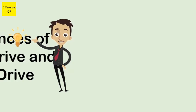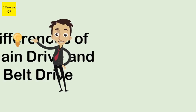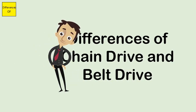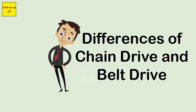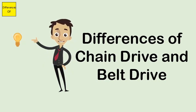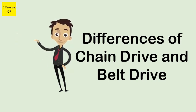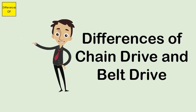Differences between chain drive and belt drive. Chains are made of alloys, while belt drives are made of polymers. Chain drives can operate in high temperature and moist conditions, whereas belt drives cannot operate in high temperature and moist conditions.